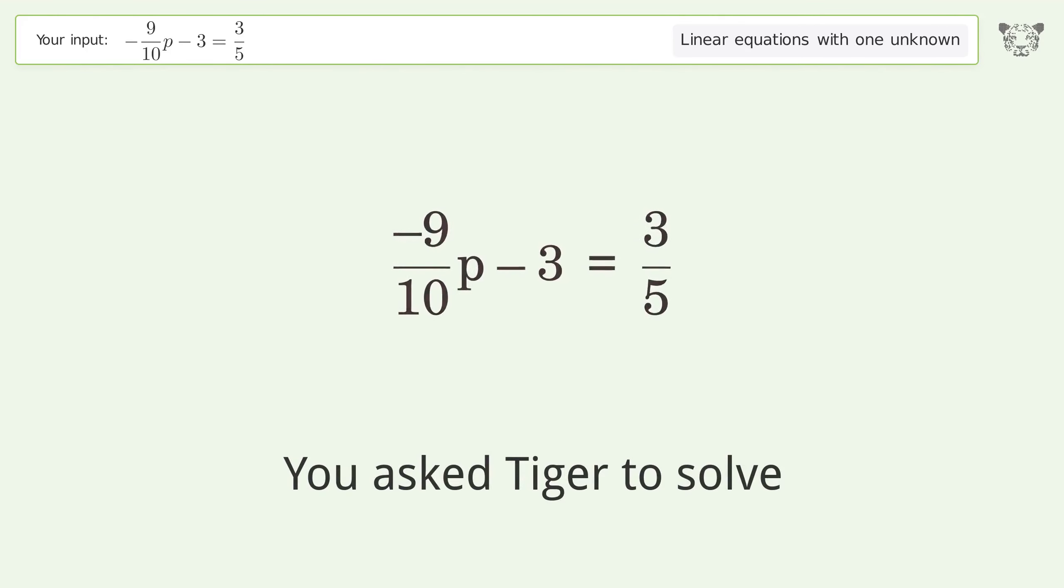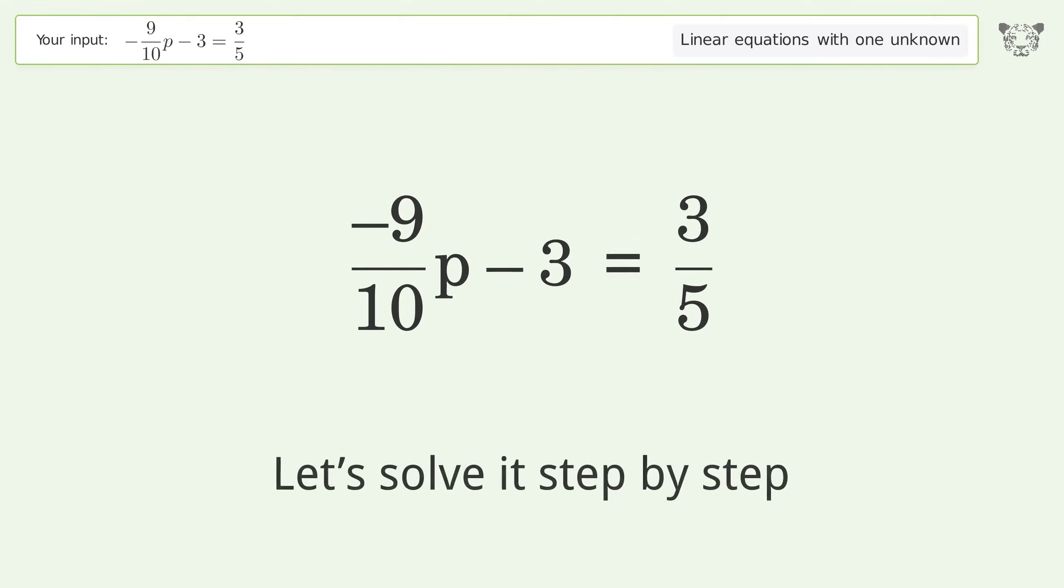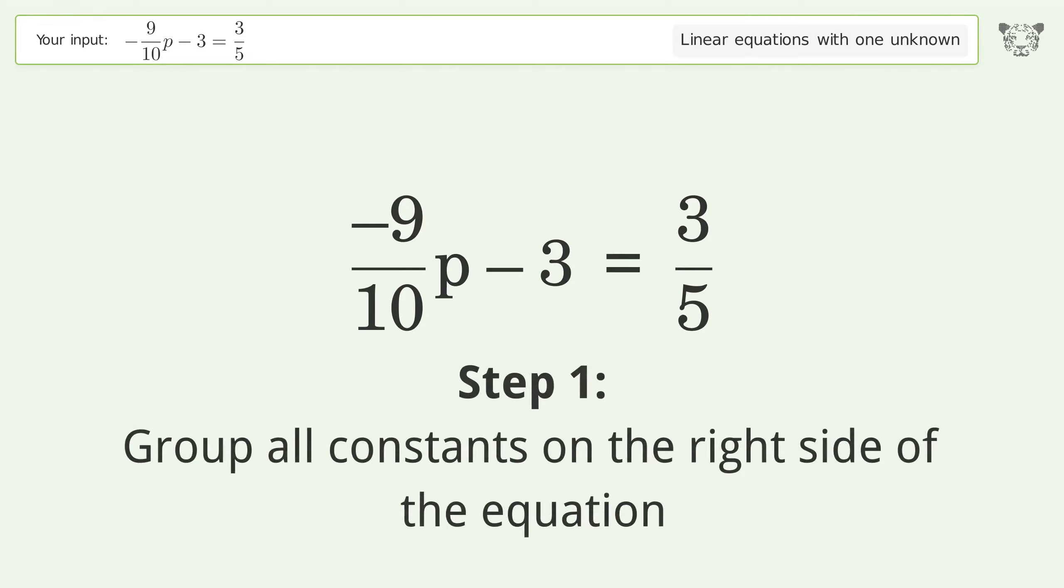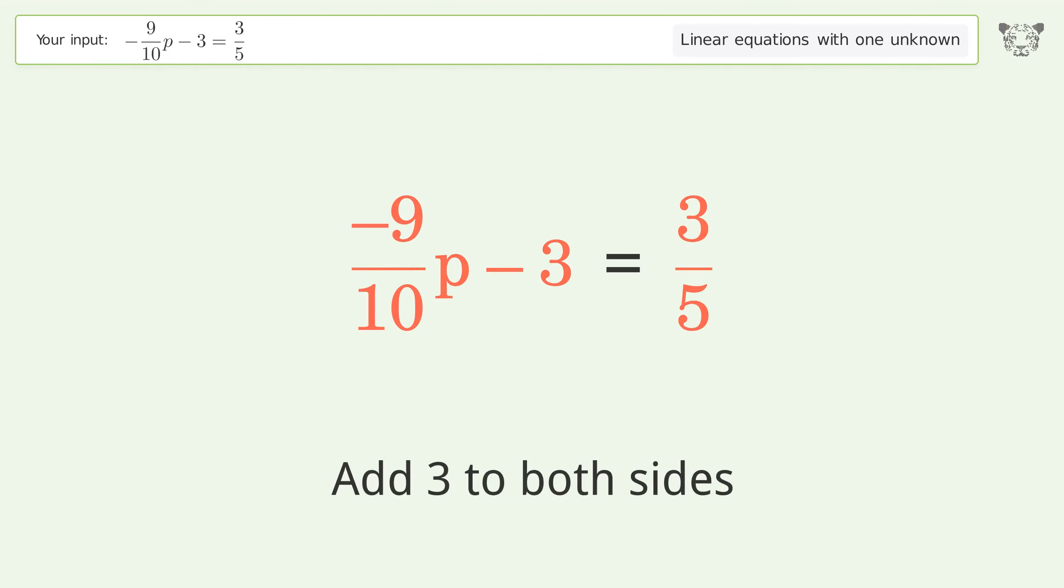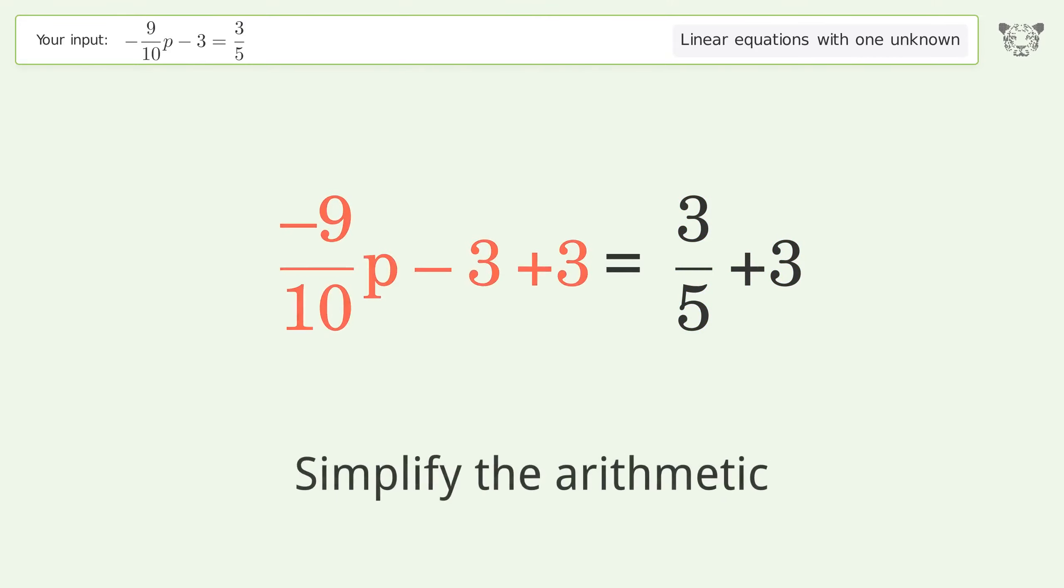You asked Tiger to solve this. It deals with linear equations with one unknown. The final result is p equals negative 4. Let's solve it step by step. Group all constants on the right side of the equation. Add 3 to both sides. Simplify the arithmetic.